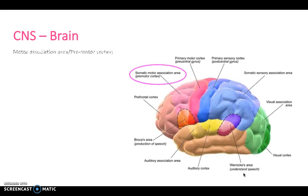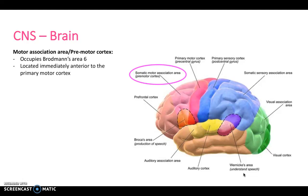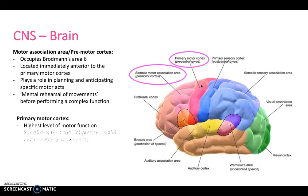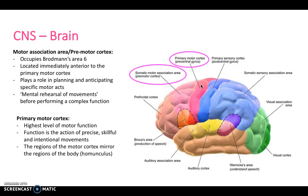The motor association cortex, the premotor cortex, occupies Brodmann area number six and is located immediately anterior to the primary motor cortex. It plays a role in planning and anticipating specific motor acts and is our mental rehearsal of movements before performing complex functions. The primary motor cortex is our highest level of motor function and controls the action of precise, skillful, and intentional or voluntary movements. The regions of the motor cortex mirror that of the body, which is all to do with the homunculus.